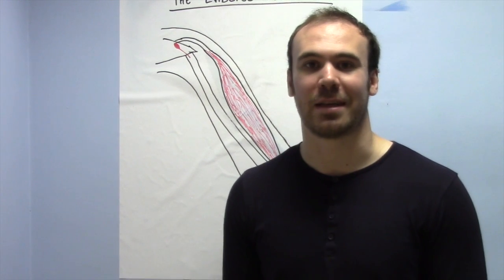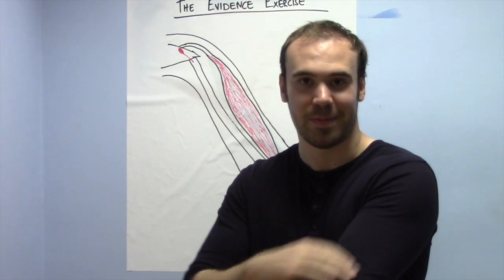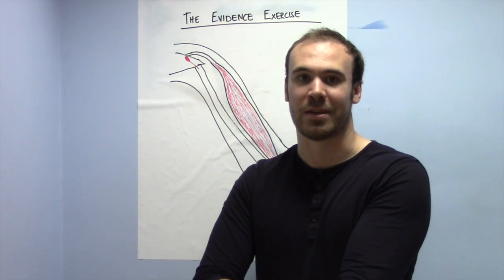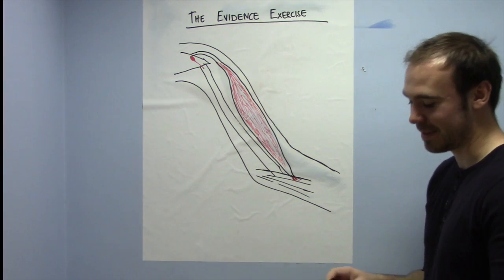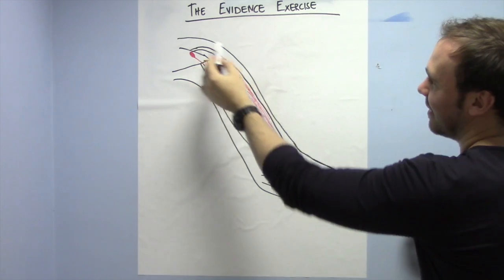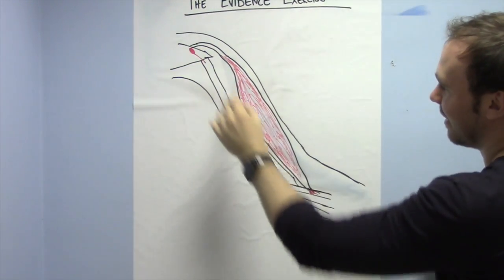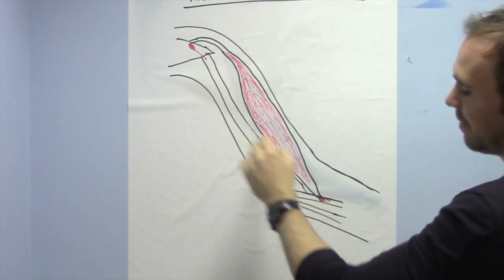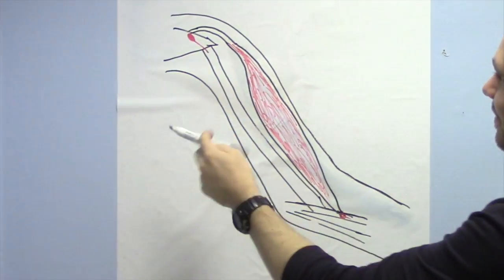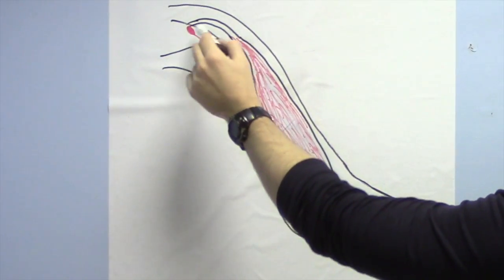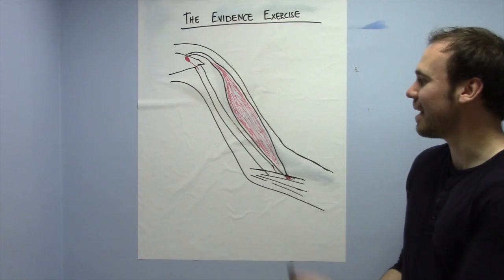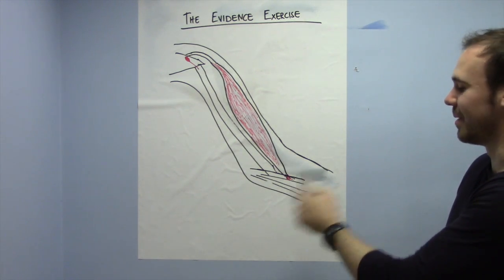For example, take the biceps muscle which is here on the arm, which attaches on the scapula up here and then inserts down on the lower arm bones, the radius, down here. So I've got a diagram here of this. This is the biceps muscle, this red thing here. This is the outside of the arm, and this is the humerus bone which is the bone in the upper part of your arm. So up here is the scapula, and as you can see the tendons attach the muscle into the bone down here.